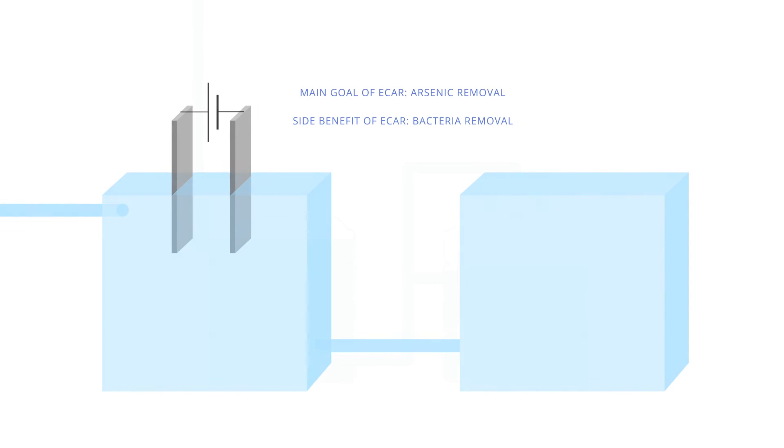It is based on a low-cost innovative technology called Electrochemical Arsenic Remediation, or ECAR, that removes all contaminants from groundwater. ECAR uses small amounts of electricity to dissolve a steel plate and produce rust particles. This rust binds with arsenic in the water and also traps bacteria. Both are then removed by settling out the rust.